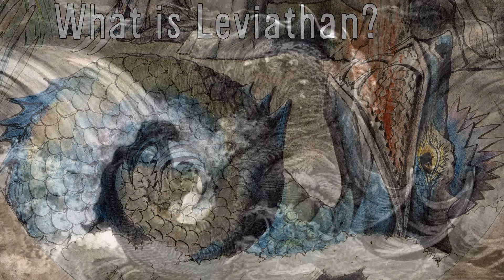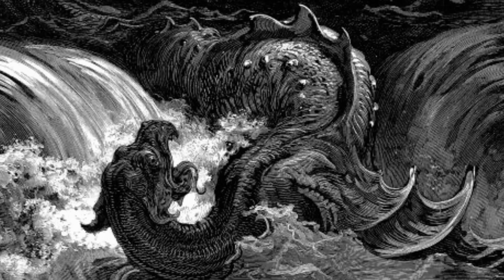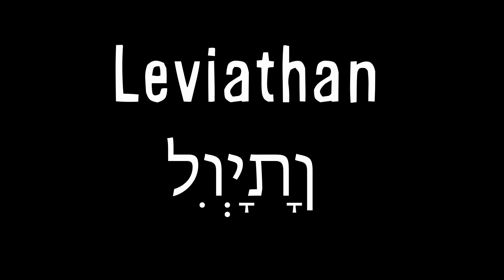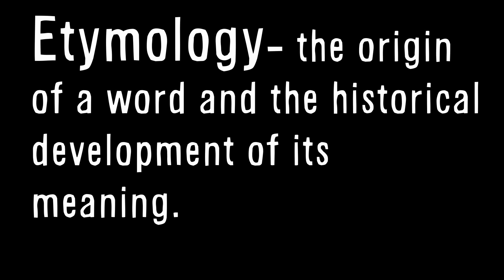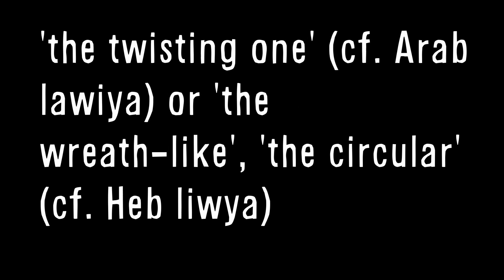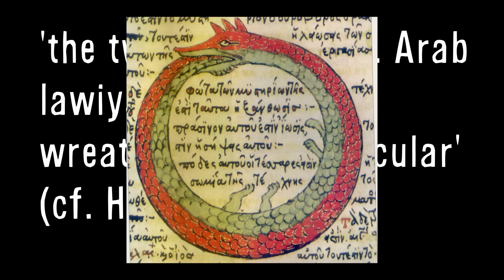Leviathan appears in the Bible a few times — six to be exact — but only rather briefly and in passing, in a manner as if the reader should already kind of know what it is. We can first learn a bit from the word Leviathan itself. The word is singular and denotes an individual as opposed to a species — a name for a specific individual, like the Minotaur, or the Hydra, or Jormungandr. The etymology associates it with the Hebrew words meaning 'to coil' and 'to twist,' and its name translates to 'the twisting one,' 'the wreath-like one,' or 'the circular one.' The name itself is strongly associated with descriptions of a snake, particularly one in an Ouroboros position.